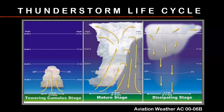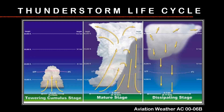Everybody has probably seen this graphic — it was in Aviation Weather Advisory Circular 00-06B and has since been incorporated into the FAA Weather Handbook. It shows the thunderstorm life cycle: the towering cumulus stage, the mature stage, and the dissipating stage. When instructors teach pilots about this, they spend most of their time on the mature stage, and I think that's the wrong approach. We should be spending more time on the towering cumulus stage — the beginning of the thunderstorm process.